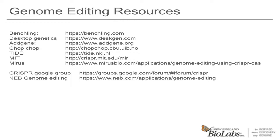Someone asked why there is only one G in the transcription template, as they thought two or three were needed. We found that with shorter RNAs, one G is sufficient — we've tested this with multiple guides and found no difference in yield between one and three Gs.